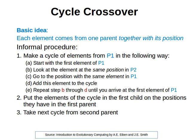We put the elements of the cycle in the first child in the positions that they have in the first parent. Then we move on and choose the next element in parent1 which is not in the cycle, and do the same thing. We look at the element in p2 at the same position, find its position in p1, and continue the cycle. Then we take the next cycle from the second parent.